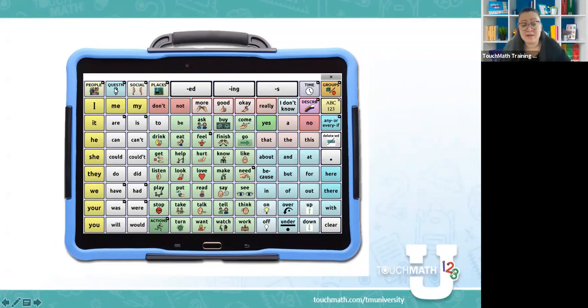Then they have a button for questions, common questions that they may need to ask. They have social, a tab for social questions, what is your name, how old are you, things like that. And of course, places. These are the ones that typically come on the device.